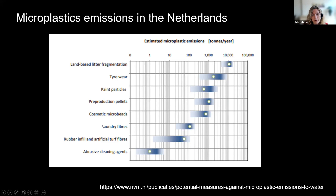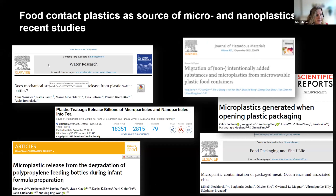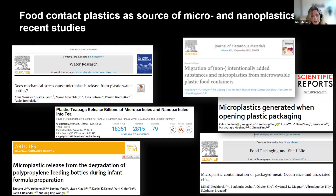This slide here is indicating that food contact plastics are a major source of micro and nanoplastics. Here's an overview of various studies which show that microplastics are released from different forms of food packaging, including plastic water bottles, microwavable plastic food containers, tea bags, infant feeding bottles made of polypropylene, and packaging used for all sorts of food products. So there's increasing evidence that food packaging is a really important source of micro and nanoplastics.